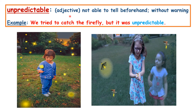Unpredictable. It's an adjective. In these pictures, we see kids trying to catch fireflies. But fireflies are unpredictable — it means they could escape without any notice. We tried to catch the firefly, but it was unpredictable. Unpredictable means not able to tell beforehand, or without warning. Thank you.